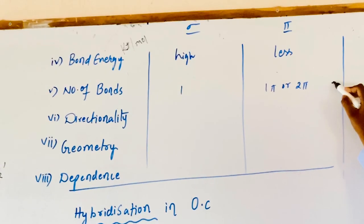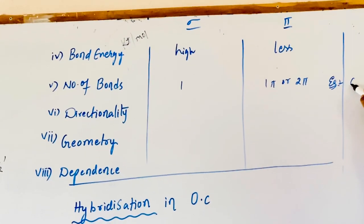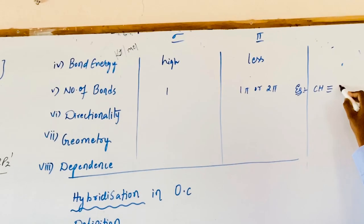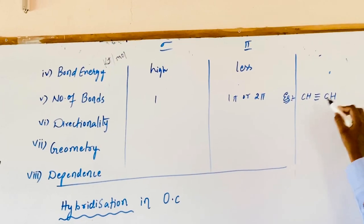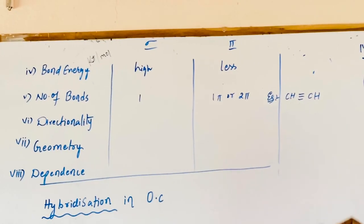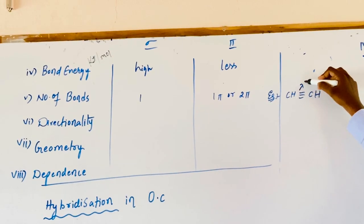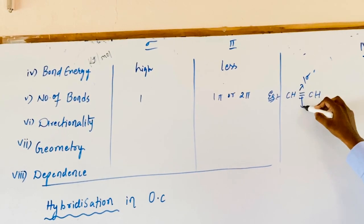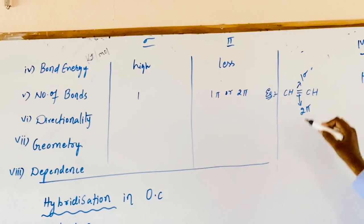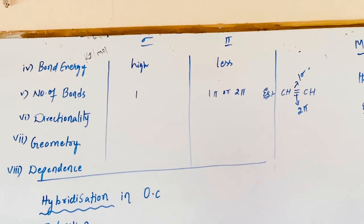For example, in ethyne (C2H2), the carbon-carbon bond is a triple bond — one sigma bond and the remaining two are pi bonds.